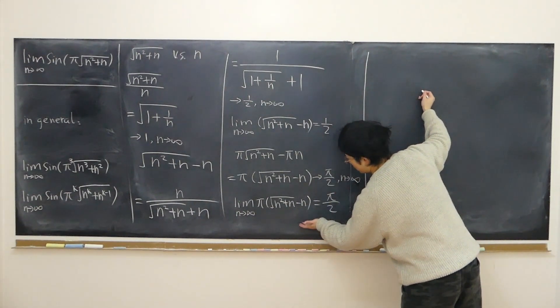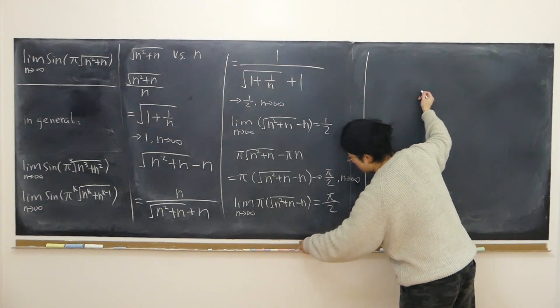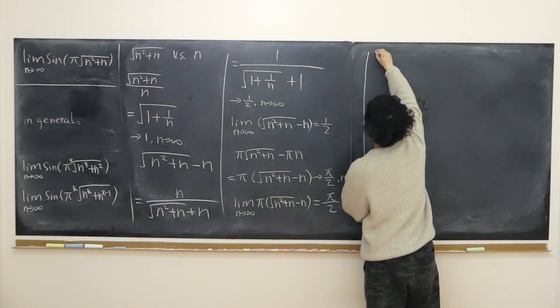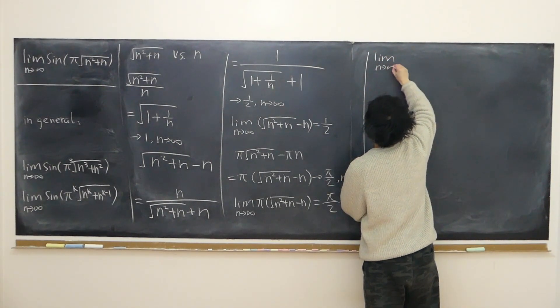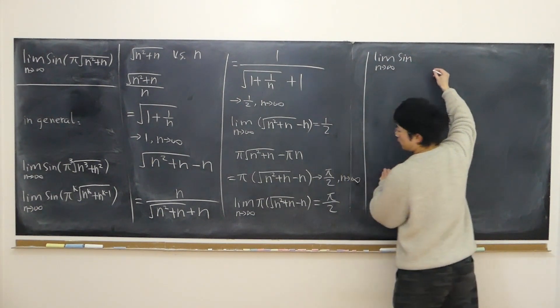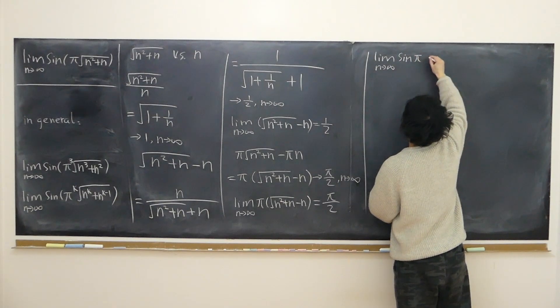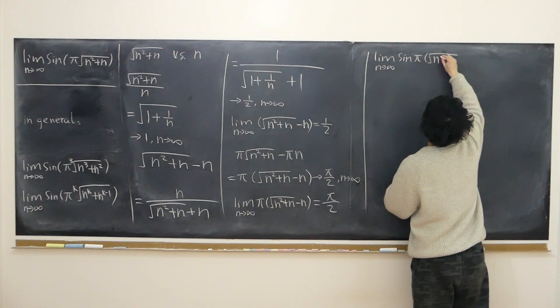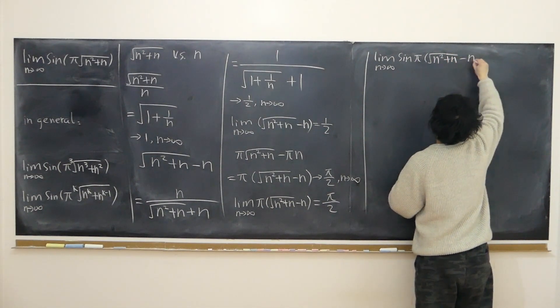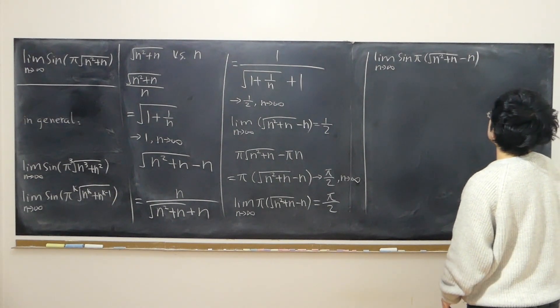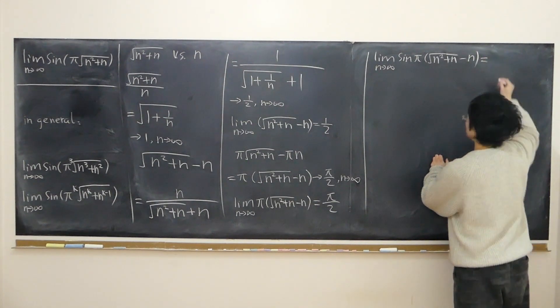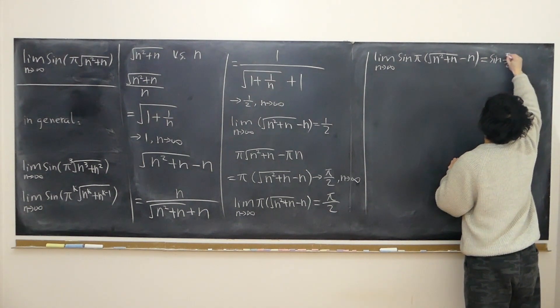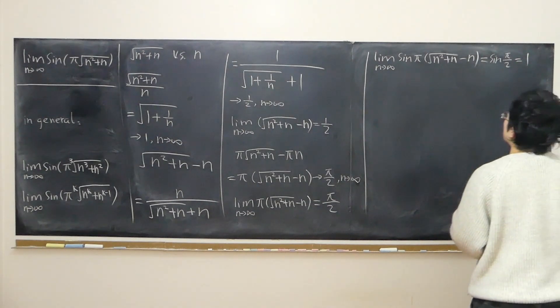Now I can draw a further conclusion. If I apply the sine function, that'll approach sine half π, which is just one. My conclusion is: the limit as n approaches infinity of sine of π times (square root of n squared plus n minus n) can easily approach sine half π, which is just one.